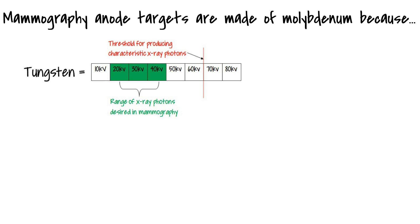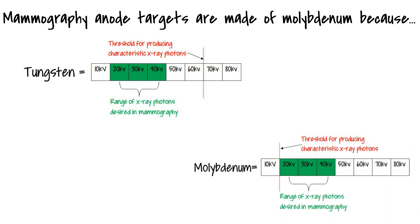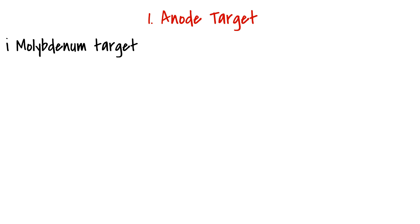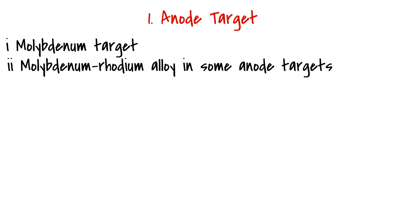Because of this, mammography anode targets are made of molybdenum instead of tungsten. Molybdenum has a lower atomic number than tungsten, and using molybdenum targets, only 20 kilovolts is required to produce characteristic photons. This is ideal, because mammography is done at between 20 and 40 kilovolts. We should also point out that some mammography tubes are made of alloys of molybdenum and rhodium. These anodes allow production of higher photon energies, which is needed to image dense breast tissue.